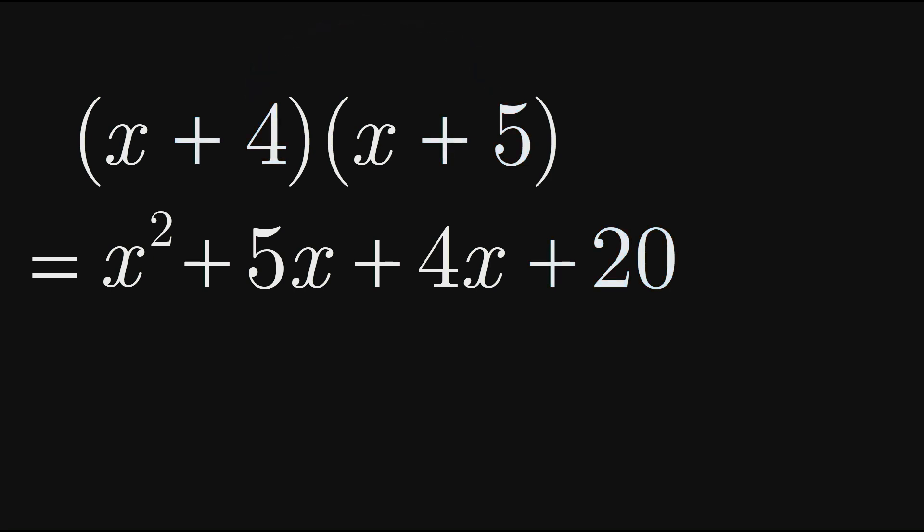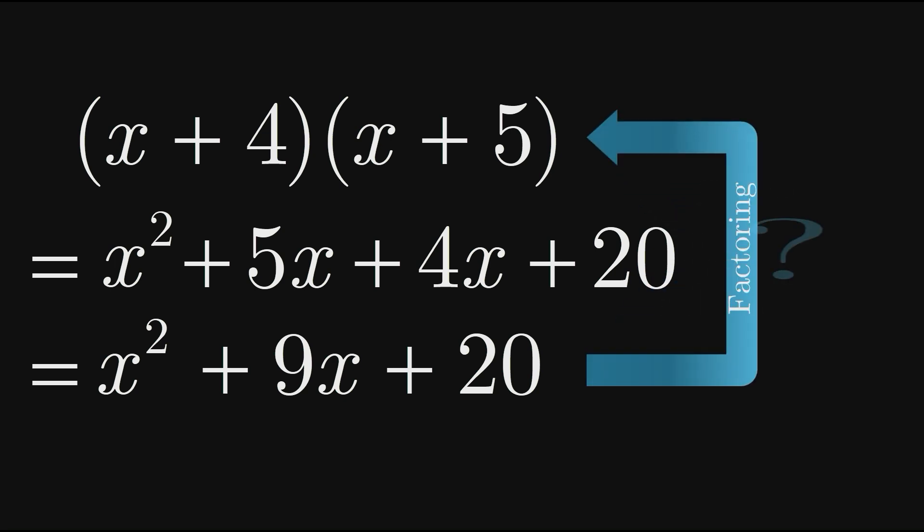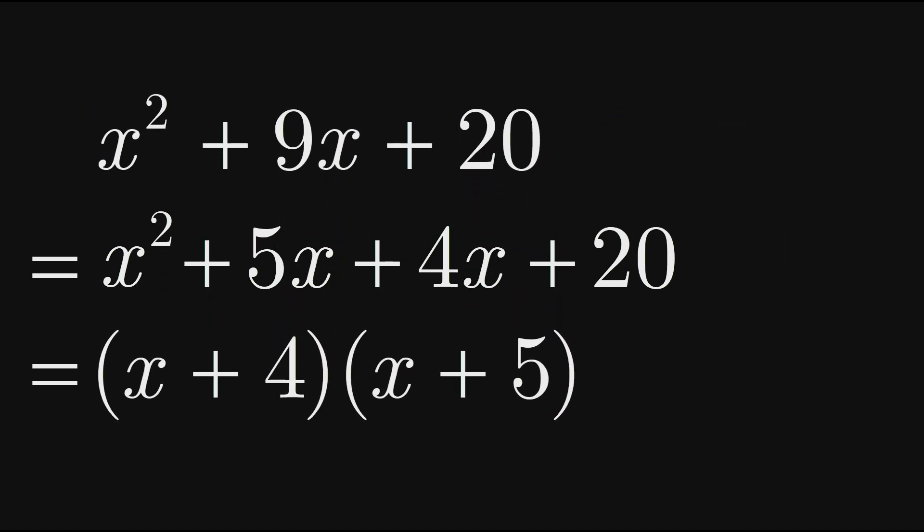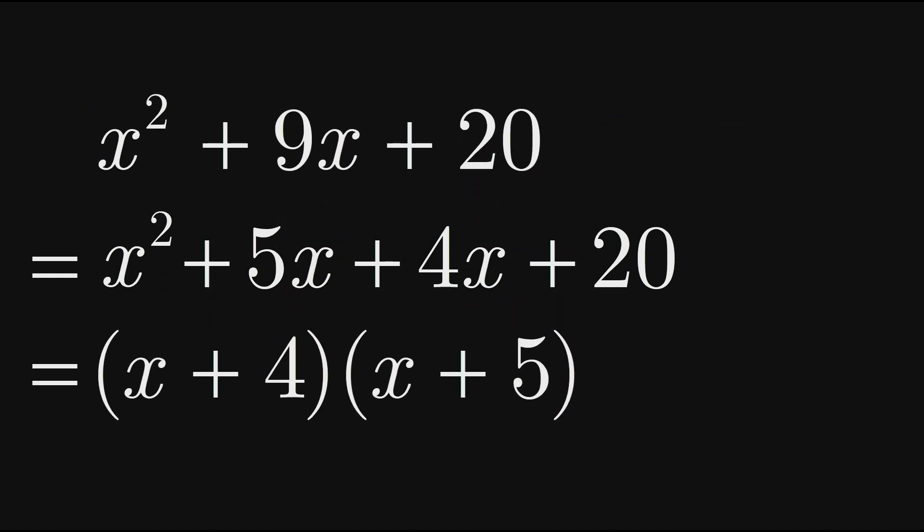Notice that we can simplify this result by adding the like terms 5x and 4x to get 9x. Let's now turn our attention to how we could go about factoring our result here to get back to the initial expression. That is, how can we factor x squared plus 9x plus 20 to get x plus 4 times x plus 5?